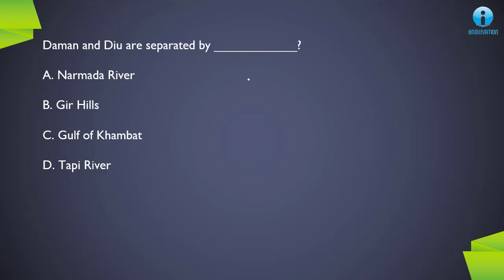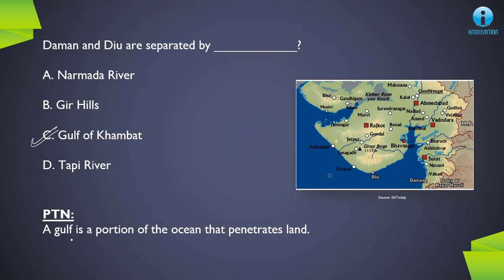Next question: Daman and Diu are separated by which water body? These union territories are separated by the Gulf of Khambhat. A gulf is a portion of ocean that penetrates a land mass. You can see on the map this portion has penetrated the land part of our country, with Diu on one side and Daman on the other — separated by the Gulf of Khambhat.